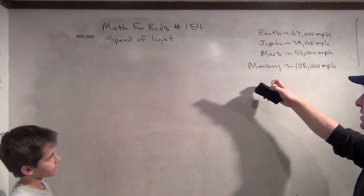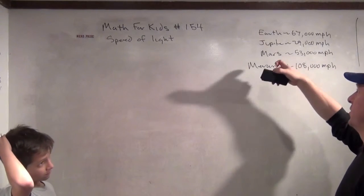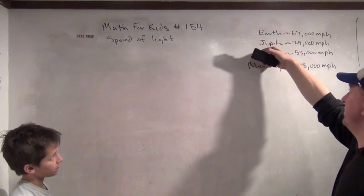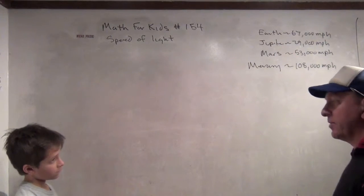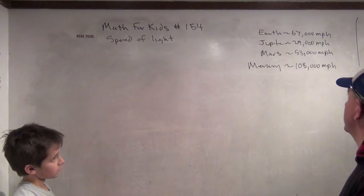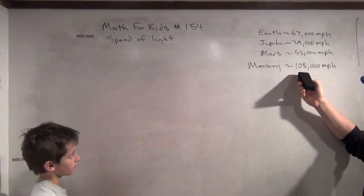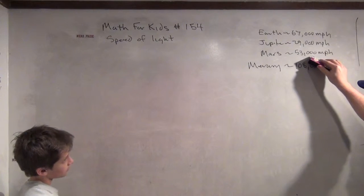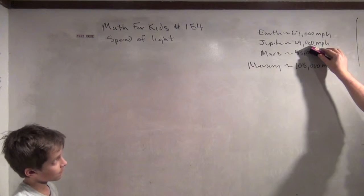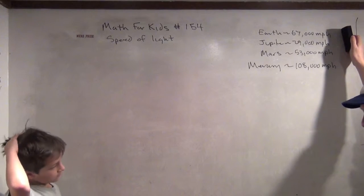So the last couple of videos we've made, Math for Kids number 153, 152, 150, and 149, we were calculating the speed of planets. We found that Mercury was going 108,000 miles per hour, Mars was going 53,000 miles per hour, Jupiter was going 29,000 miles per hour, and the Earth was going 67,000 miles per hour.